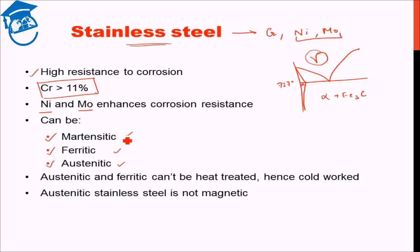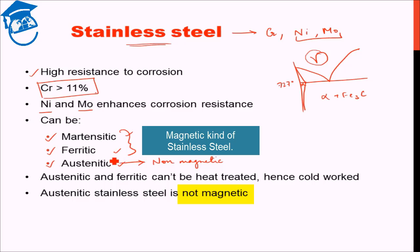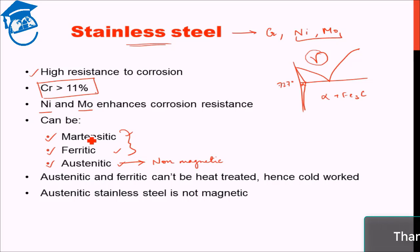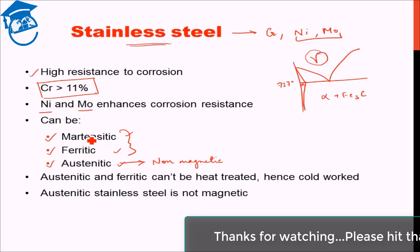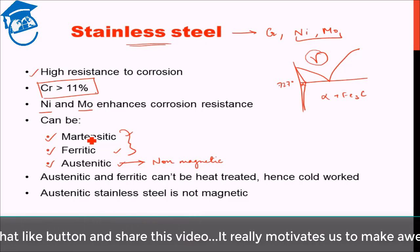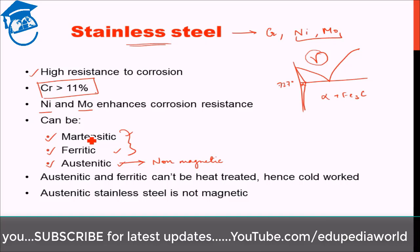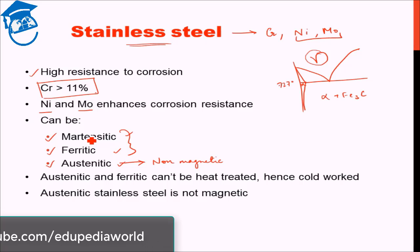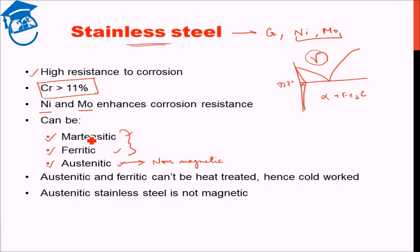An easy way to identify whether stainless steel is austenitic or ferritic is to check whether it is magnetic. Out of the three types, austenitic stainless steel is the only non-magnetic one. The other two — ferritic and martensitic — are magnetic and attracted by magnets. With this, we conclude our discussion on the different kinds of steel and iron-carbon alloys. In the next lecture, we will discuss different kinds of cast iron, where the carbon percentage is greater than 2.1%.